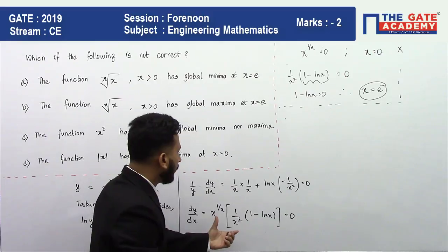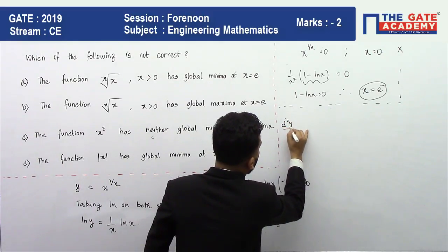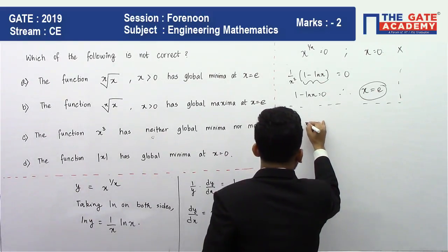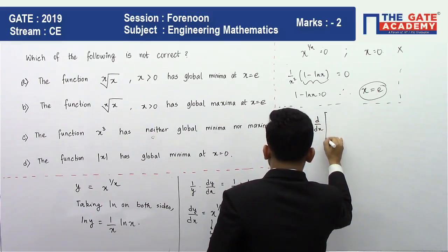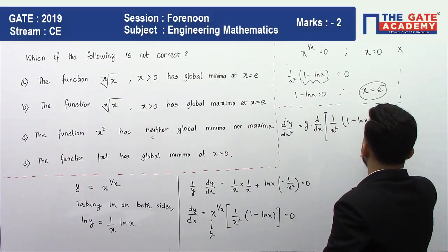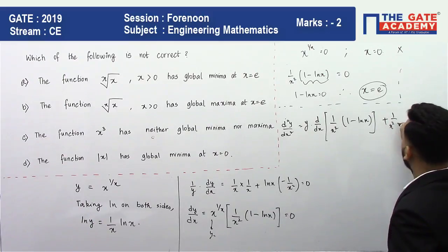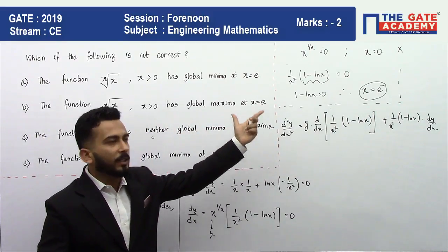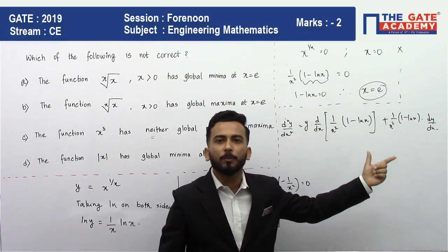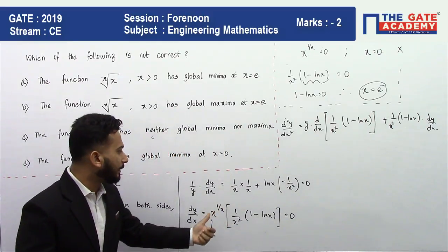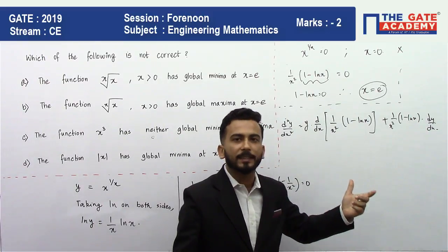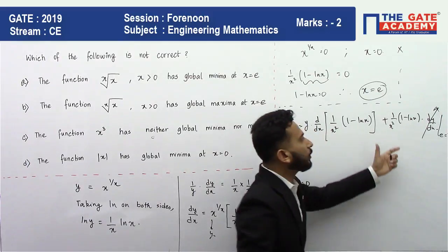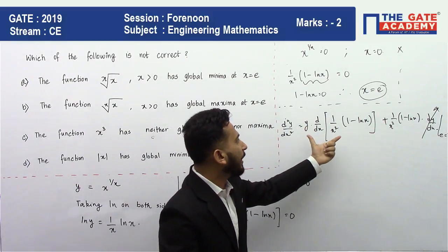For the second derivative, differentiating dy/dx = y · (1/x²)(1 − ln x) using the product rule gives: d²y/dx² = y · d/dx[(1/x²)(1 − ln x)] + (1/x²)(1 − ln x) · (dy/dx). At x = e, dy/dx = 0 since e is the stationary point, so the entire second term vanishes, leaving only the first part.